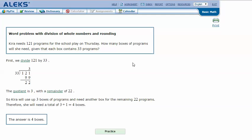First we divide 121 by 33. 33 is too big for 1, too big for 12, so 33 goes into 121.